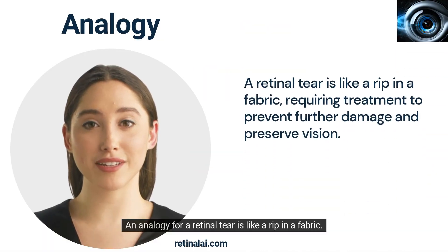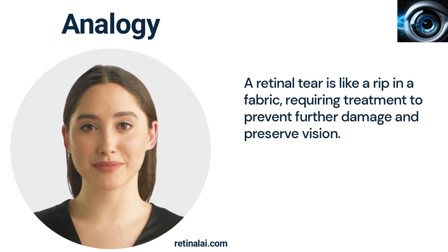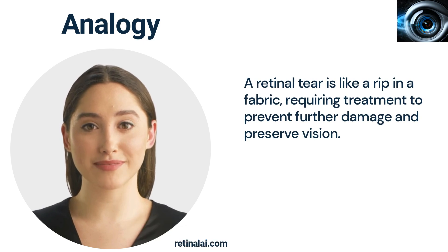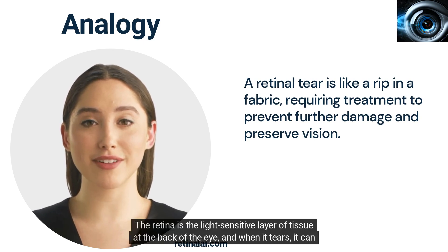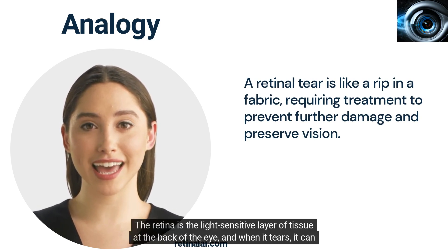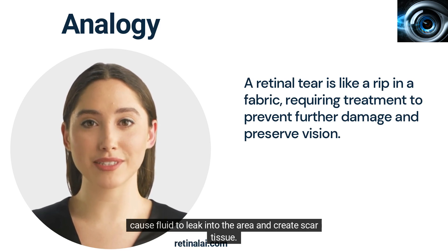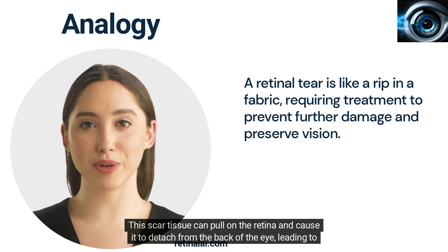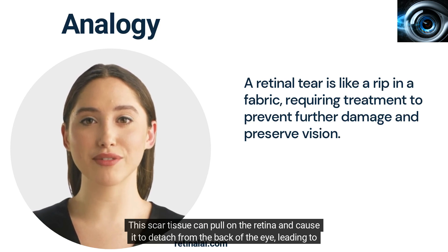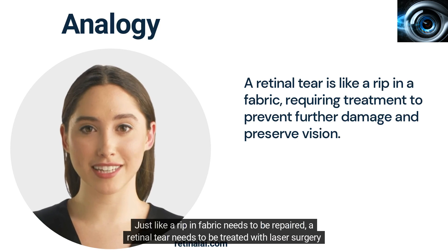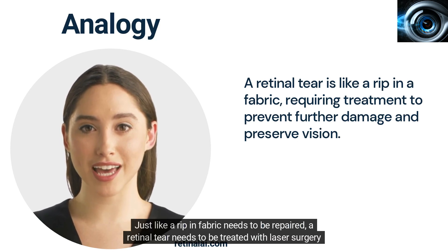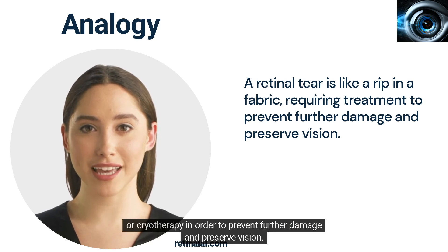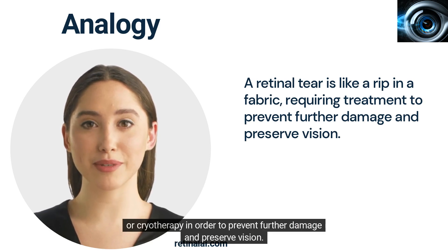An analogy for a retinal tear is like a rip in a fabric. Just like a rip in fabric, a retinal tear is an injury to the eye that can cause vision problems. The retina is the light-sensitive layer of tissue at the back of the eye, and when it tears, it can cause fluid to leak into the area and create scar tissue. This scar tissue can pull on the retina and cause it to detach from the back of the eye, leading to vision loss. Just like a rip in fabric needs to be repaired, a retinal tear needs to be treated with laser surgery or cryotherapy in order to prevent further damage and preserve vision.